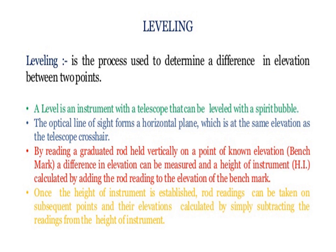In leveling, it is a process used to determine a difference in elevation between two points. A level is an instrument with a telescope that can be leveled with a spirit bubble. The optical line of sight forms an oriental line which is at the same elevation as the telescopic crosshair. By reading a graduated rod held vertically on a point of known elevation, generally called a benchmark, a difference in elevation can be measured and the height of instrument (HI) calculated by adding the staff reading to the elevation of the benchmark. Once the height of instrument is established, readings can be taken on subsequent points and elevations or RLs calculated by simply subtracting the reading from the height of instrument.